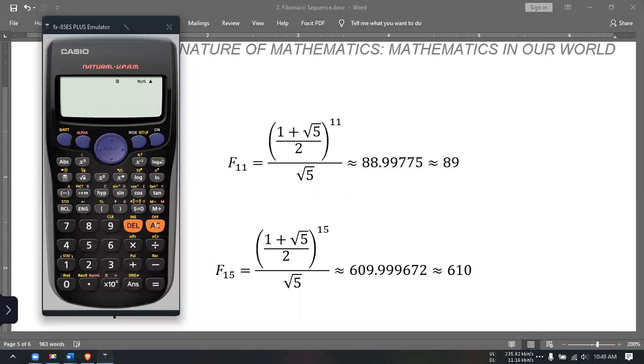Let's try the 15th term of the Fibonacci sequence. You should be getting 610. So again, you have to use parenthesis so that your calculator would follow our basic rule.